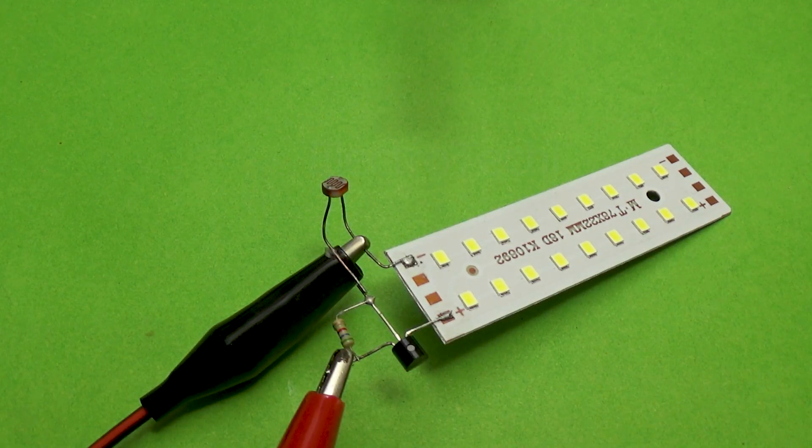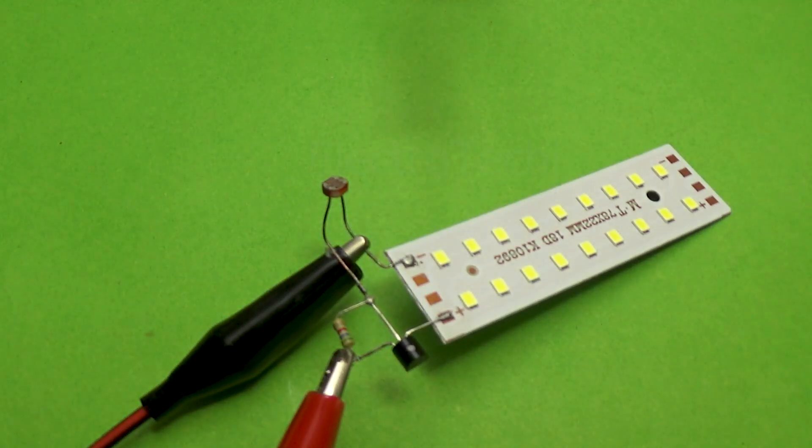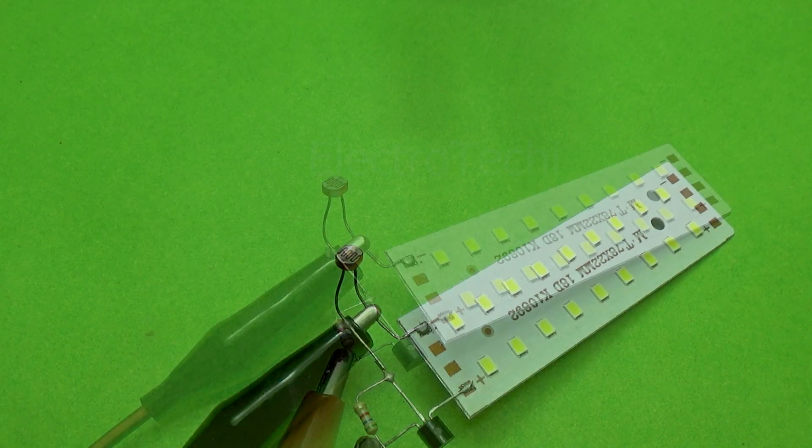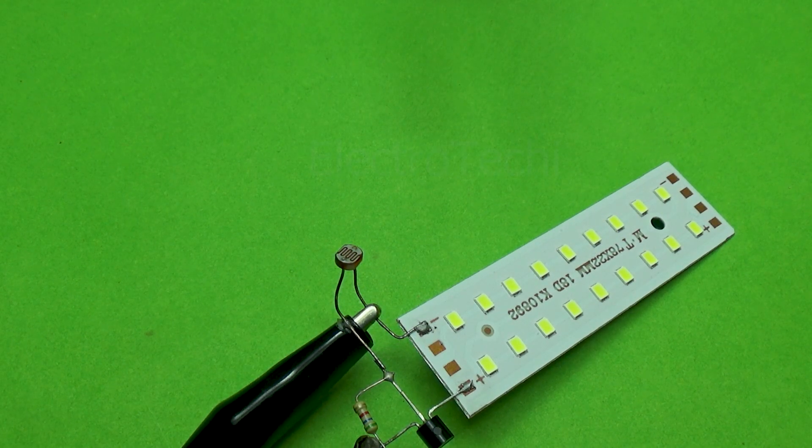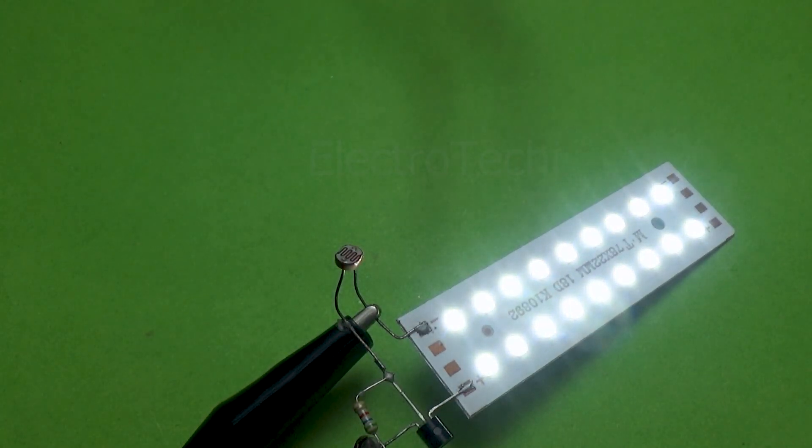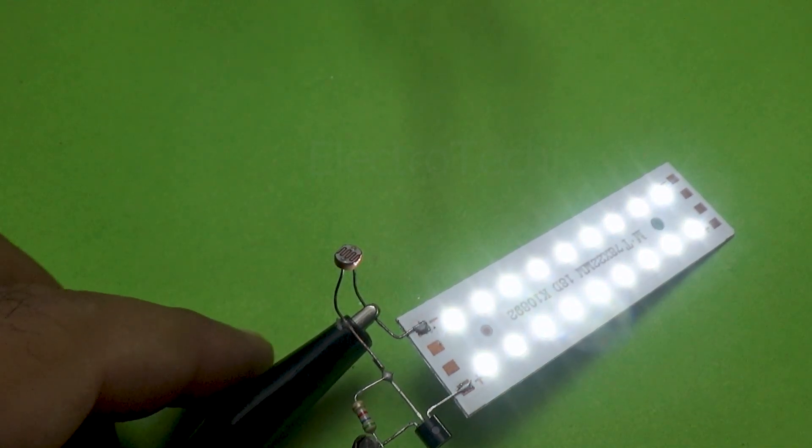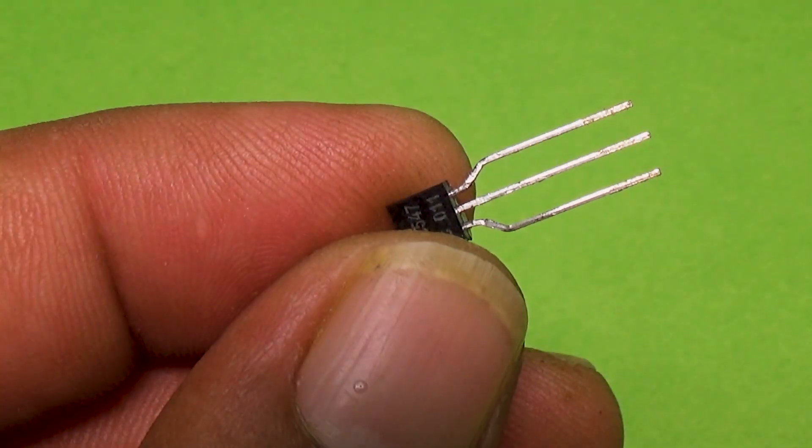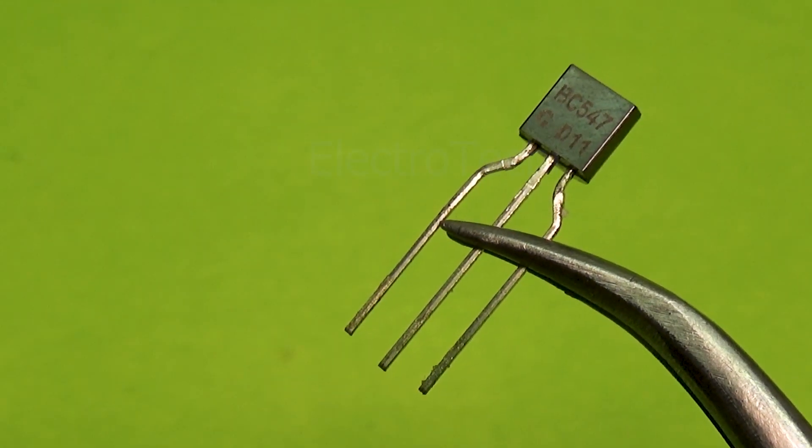Concept overview. The idea behind this project is very simple. During daylight, the light falling on the LDR keeps the LED turned off. But as soon as it becomes dark, the LDR senses the change and automatically turns the LED on. This is the same concept used in streetlights, garden lamps, and night indicators. It's amazing how such a tiny circuit can do something so useful.